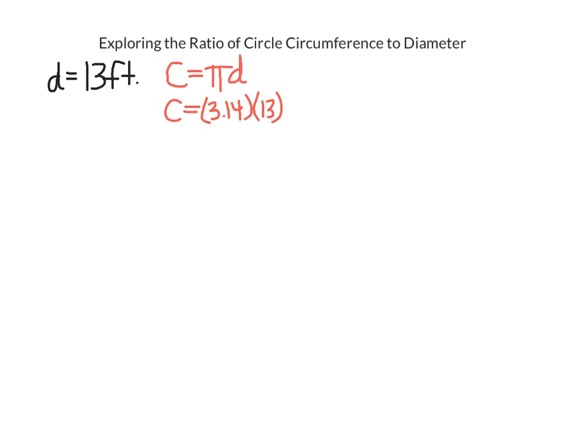And remember at this stage, do not use the pi button, even if your calculator has one. And when I multiply that, I get 40.82. And we usually go ahead and leave those two decimal places. If it's any more than two decimal places, we usually round to two decimal places. And we still want our units, which is feet. So we're going to need approximately 41 feet of piping or brick or whatever we're going to line that pond with. But our answer is 40.82.